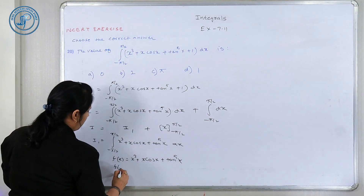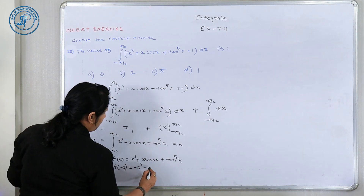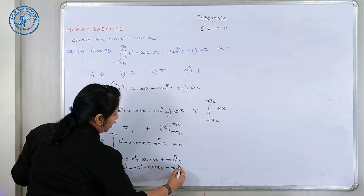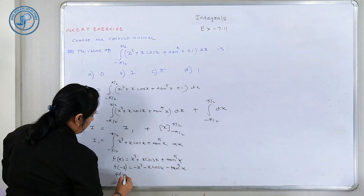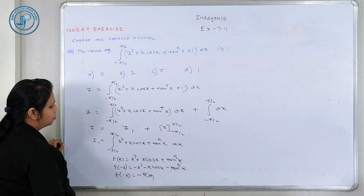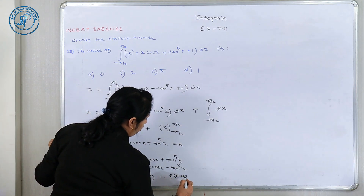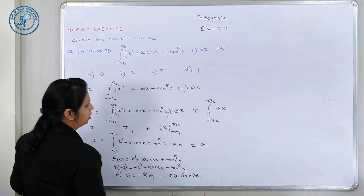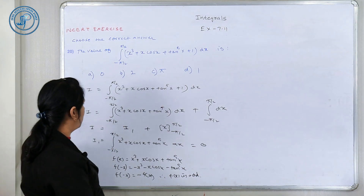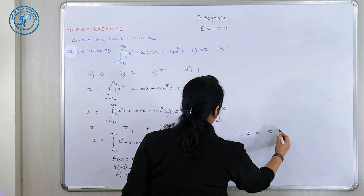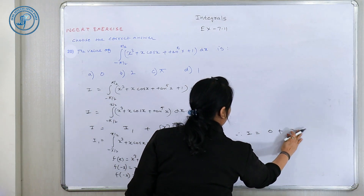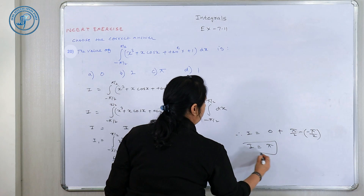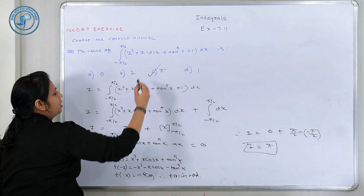जड़ा check कर लेते हैं — यह function odd है या even है, क्योंकि यह minus A to A limit है। F(X) = X³ + X·cos(X) + tan(5X)। F(minus X) लेंगे तो: minus X³ minus X·cos(X) — क्योंकि cos(−θ) = cos(θ) — and tan(5X) negative। So F(minus X) = minus F(X), therefore F(X) is an odd function। Since odd function है, इसका integral over symmetric interval 0 हो जाएगा, so I₁ = 0। Upper limit minus lower limit: π/2 minus (minus π/2) = π। So answer = π।